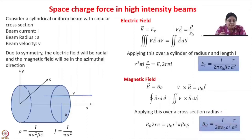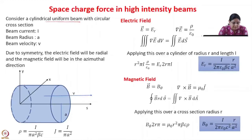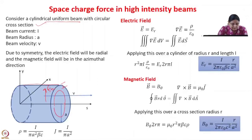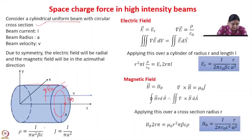To understand the space charge force in high intensity beams, let us consider a simple model: a cylindrical uniform beam with circular cross section. The beam current is I, the beam radius is A, and the beam is moving with a velocity V. Due to symmetry, the electric field will be in the radial direction, and there will be a magnetic field in the azimuthal direction. Here rho is the charge density and J is the current density.